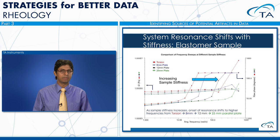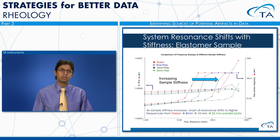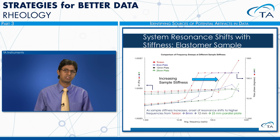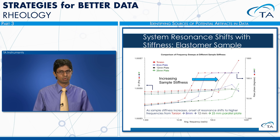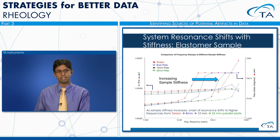Inertial effects also arise with solid samples of low stiffness, such as elastomeric materials. A frequency sweep on a rubber elastomer from 1 to 628 radians per second using torsion rectangle, 8, 12, and 25 mm parallel plates shows good agreement at lower frequencies. At higher frequencies, the phase angle shoots up earliest for the torsion geometry because sample stiffness is lowest there, then for the 8 mm plate, 12 mm, and finally the 25 mm parallel plate.